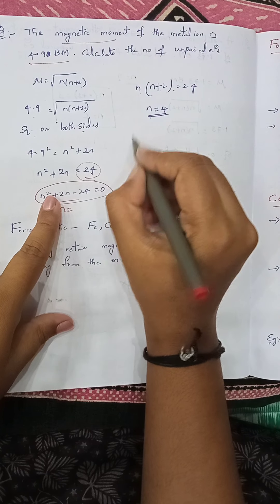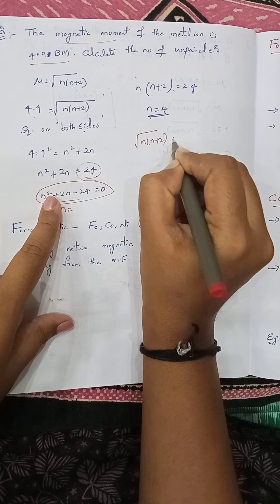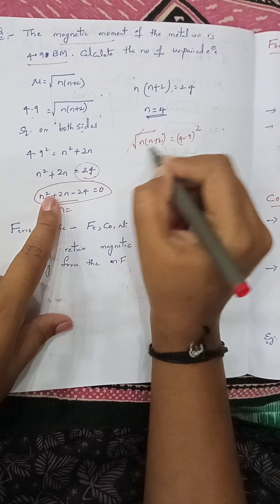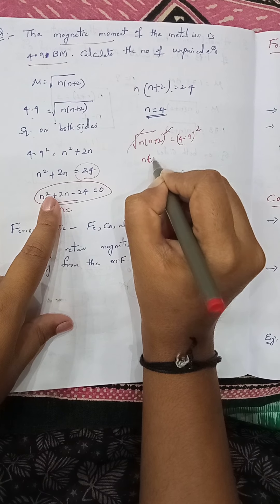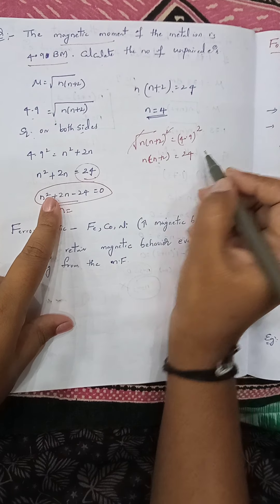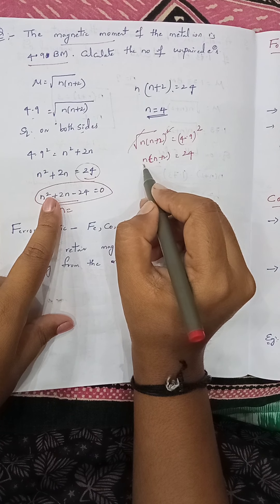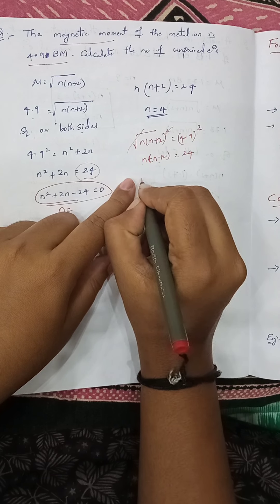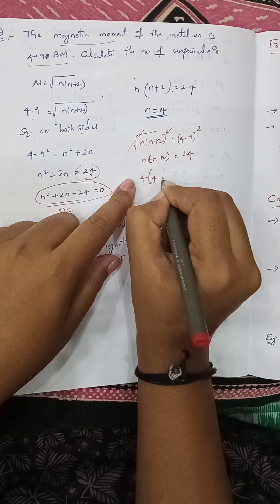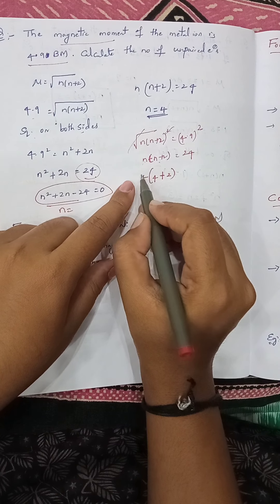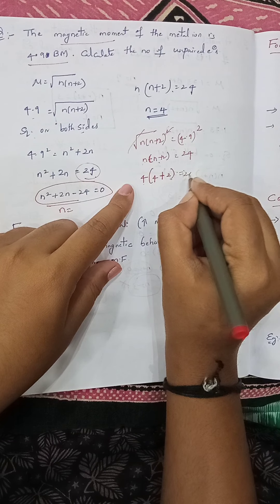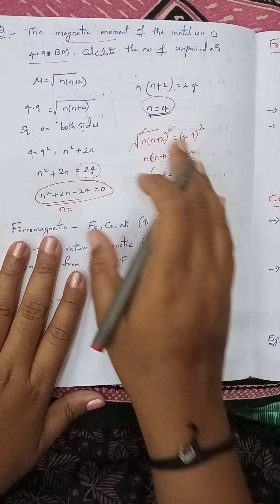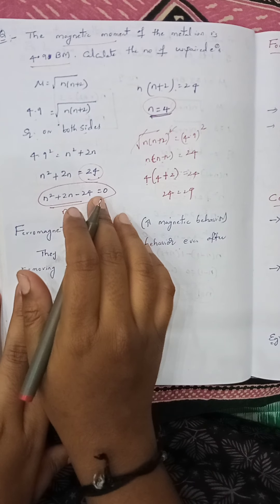Now we will see one more question similar to the previous one. The magnetic moment of the metal ion is given as 4.9 Bohr magnetons. Calculate the number of unpaired electrons. Here μ = 4.9, so 4.9 = √(n(n+2)). Taking square on both sides, square and root get cancelled, and 4.9² ≈ 24. So n(n+2) = 24, giving n² + 2n − 24 = 0.